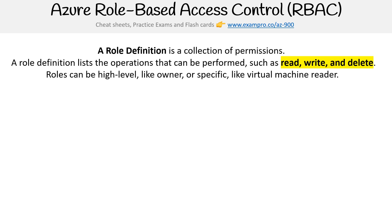Now looking at a role definition — a role definition is a collection of permissions. Policies are permissions; a role definition lists the operations that can be performed, such as read, write, and delete. Roles can be high level like owner, or specific like a virtual machine reader.